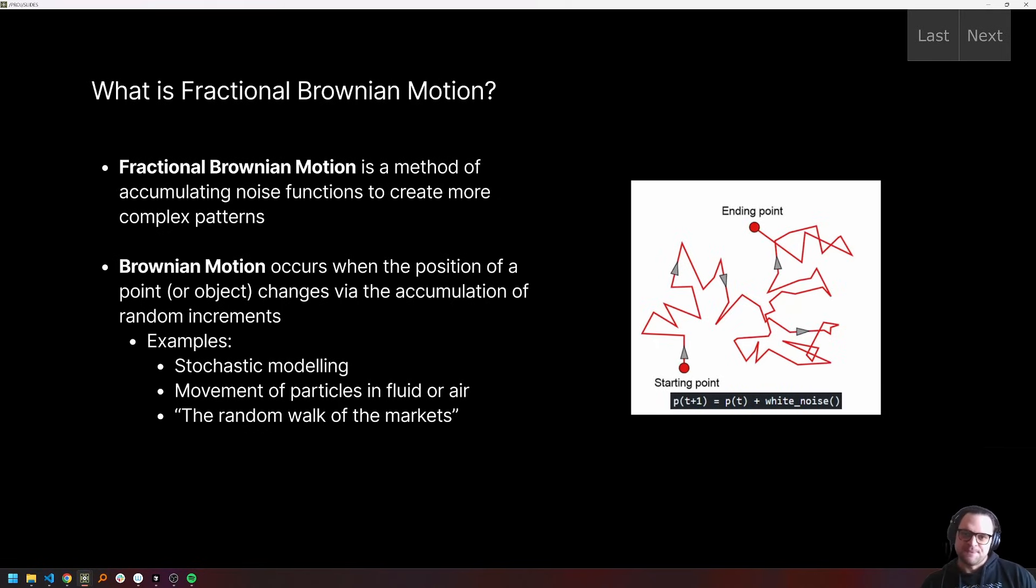So with all that said, fractional Brownian motion is sometimes known or you might hear it online as fractal Brownian motion. They are both probably fine terms. I think fractional is a slightly more precise term and it is the one that I prefer to use. Fractional Brownian motion is a method of accumulating noise functions to create more complex patterns.